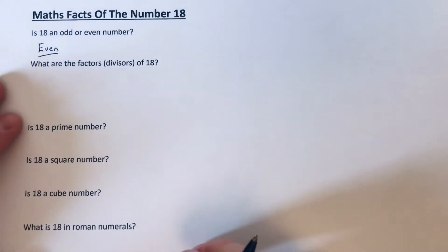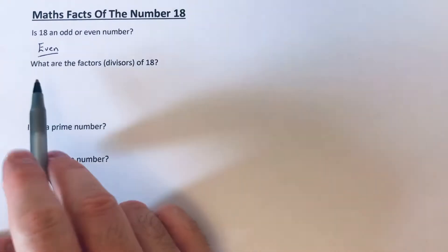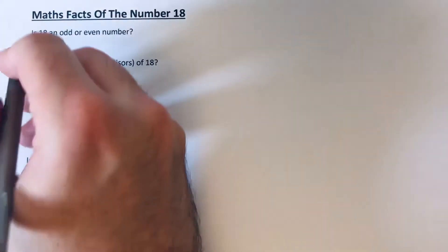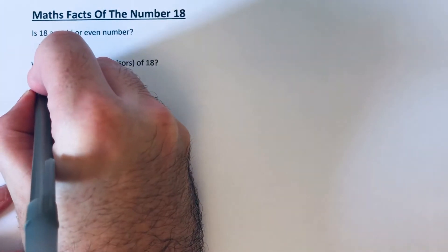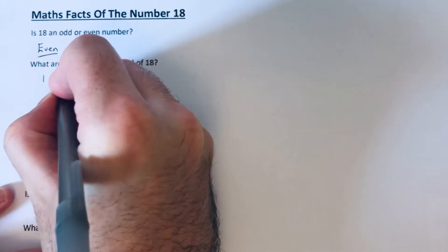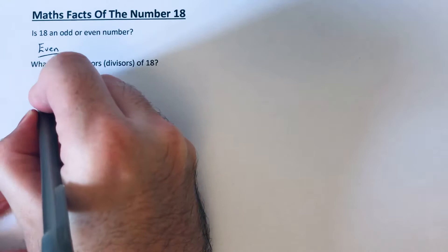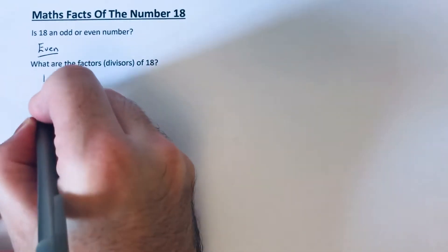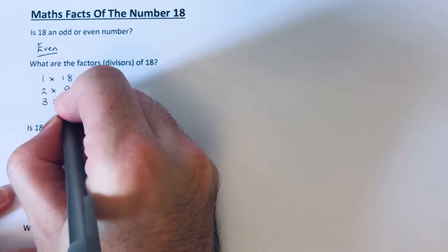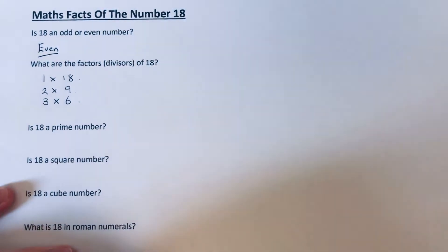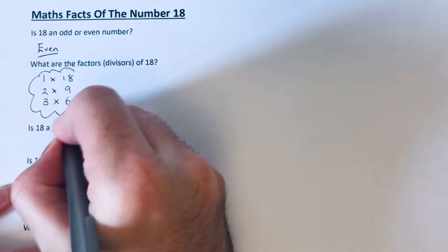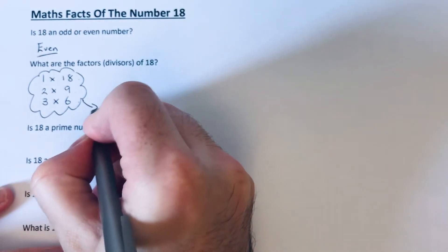What are the factors of 18? So factors go into the number. Let's start with our ones. One goes into 18 eighteen times, two goes into 18 nine times, three goes into 18 six times. Four doesn't work, five doesn't work, and then you're back to the sixes.